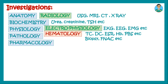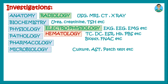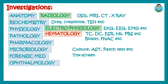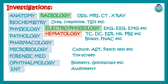Pathology has its own investigations like biopsy and FNAC. Pharmacology, though taught in medical school, doesn't have investigations of its own. Microbiology has investigations such as culture, antibiotic sensitivity test, and allergy test, known as the patch test. Forensic medicine deals with toxin screening, drug screening, and autopsy — though autopsy occurs after death, so it is not really considered part of clinical investigations. Ophthalmology has its own investigations like biometry and gonioscopy, and ENT has audiometry.